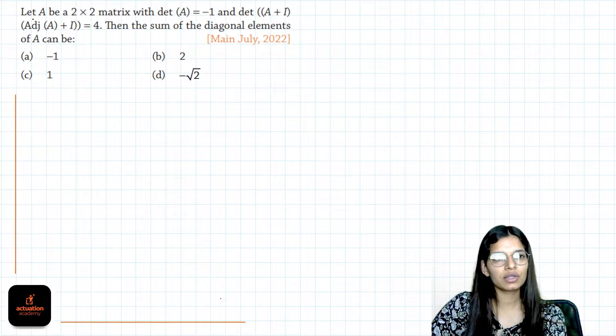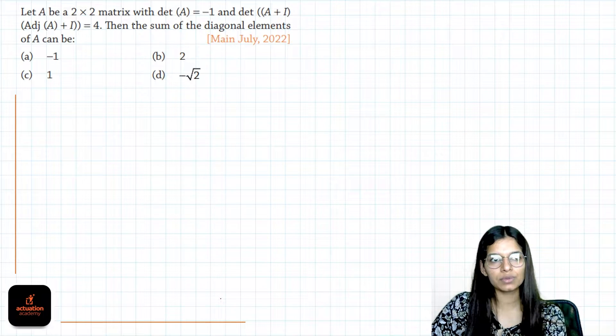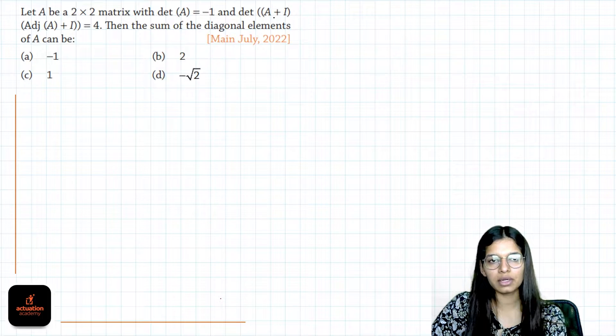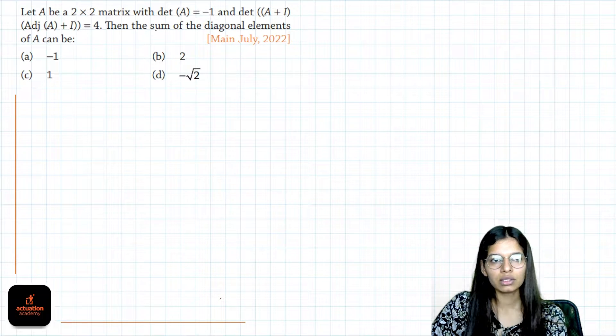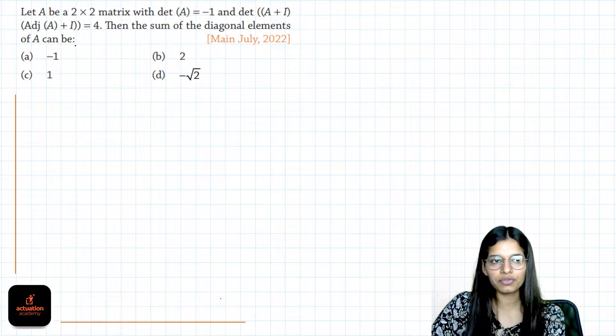Hello students, let's see the question. Let A be a 2 cross 2 matrix with determinant of A equals to minus 1 and determinant of A plus I into adjoint of A plus I is 4. Then sum of diagonal elements of A can be.